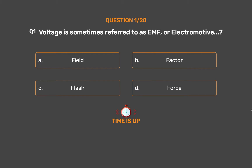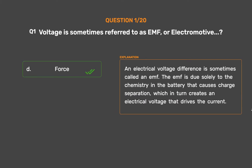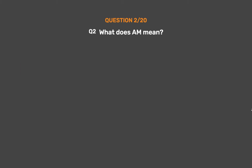The correct answer is Option D: Force. An electrical voltage difference is sometimes called an EMF. The EMF is due solely to the chemistry in the battery that causes charge separation, which in turn creates an electrical voltage that drives the current.